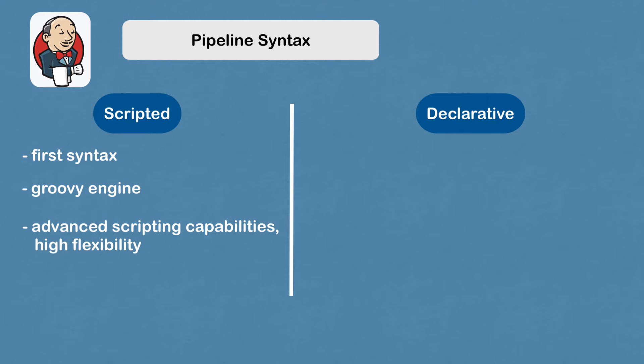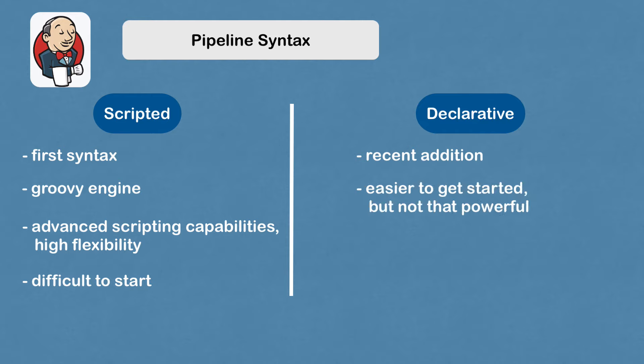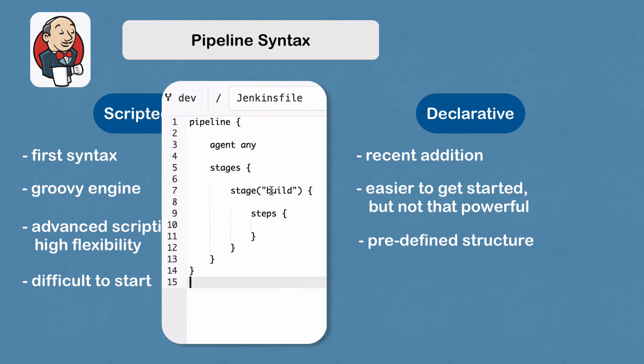For people who don't know Groovy syntax or haven't worked with Groovy, it's a little bit difficult to start with. That's why, as a recent addition, they added declarative pipeline syntax for Jenkinsfile, which is easier to get started with. It's not as powerful as the scripted pipeline, but it's easier to get started with because you have a predefined structure — a pre-given structure that you have to follow. You don't have to think about how to script all of it; you just fill in the gaps.